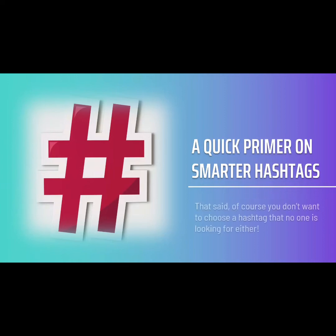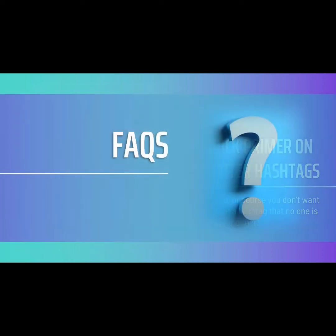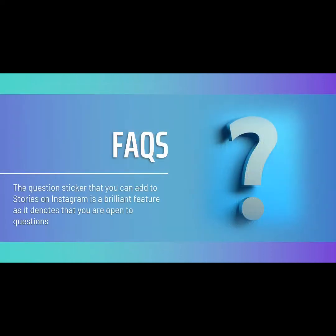The best strategy is most often to go somewhere in the middle and to aim for a hashtag that has around 30,000 posts a day. The question sticker that you can add to stories on Instagram is a brilliant feature, as it denotes that you are open to questions. This 'Ask Me Anything' story is a great place for you to clear up any misunderstandings around your products or services, as well as to help encourage people to make that final decision to buy. The sticker provides a small chat box where users can type up their questions, and even if an answer doesn't lead to a sale, it can be excellent for market research purposes.